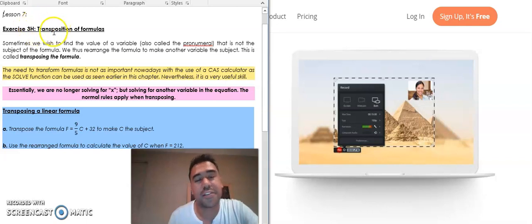This is changing of formulas. Sometimes we want to find the value of a variable or a letter that is not the actual subject of the formula itself, so we just rearrange the formula to make another variable the subject, which is what we're going to do in this example.